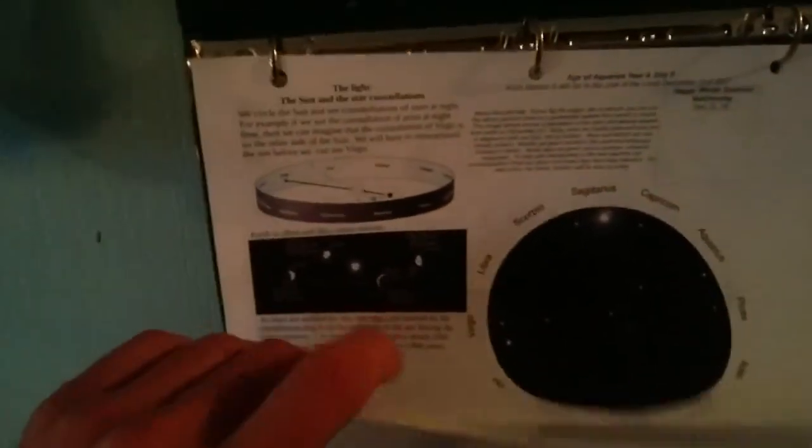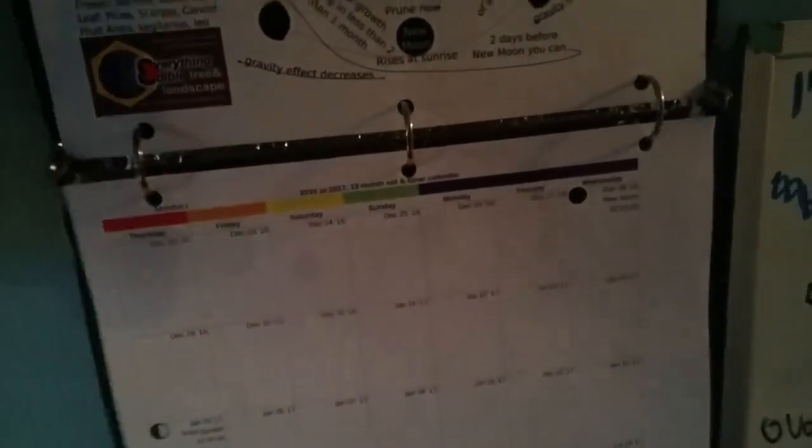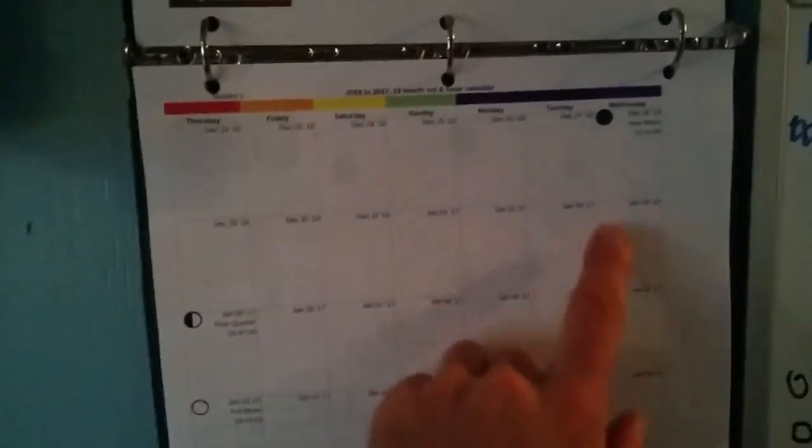This is a 13-month calendar. That means there's 13 months. And each month is 28 days exactly. 7 days by 4 days. I've put the moons on this calendar. The new moon,